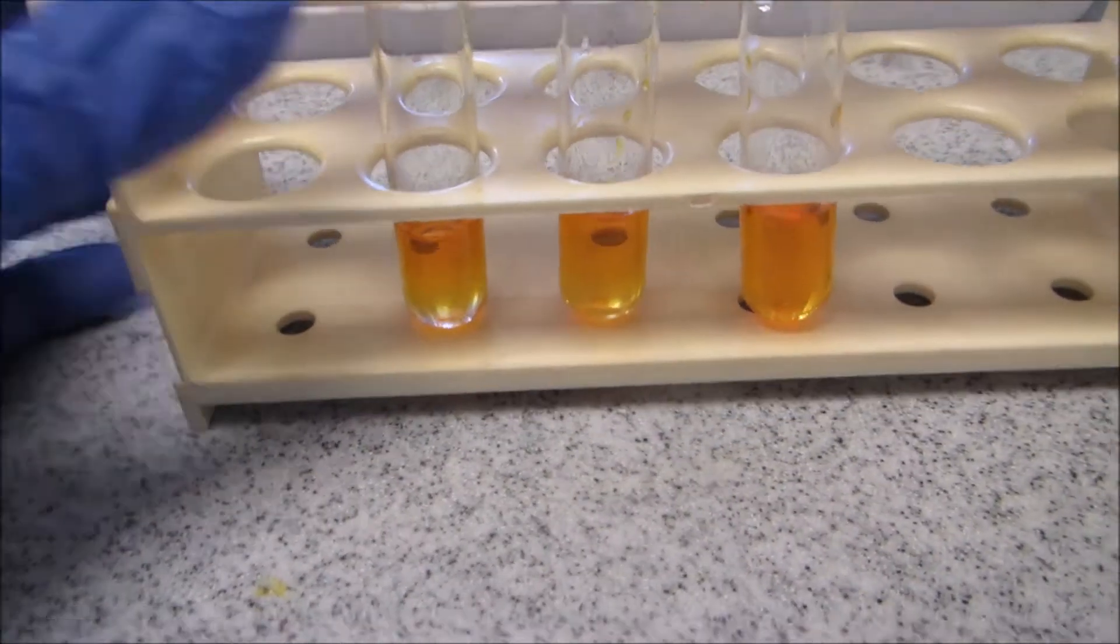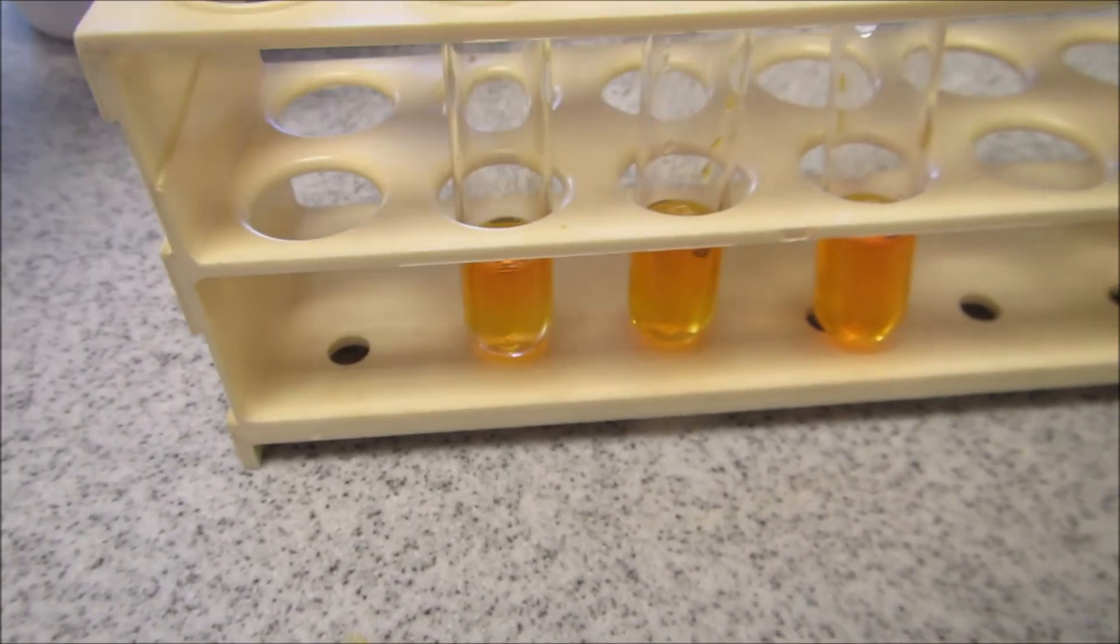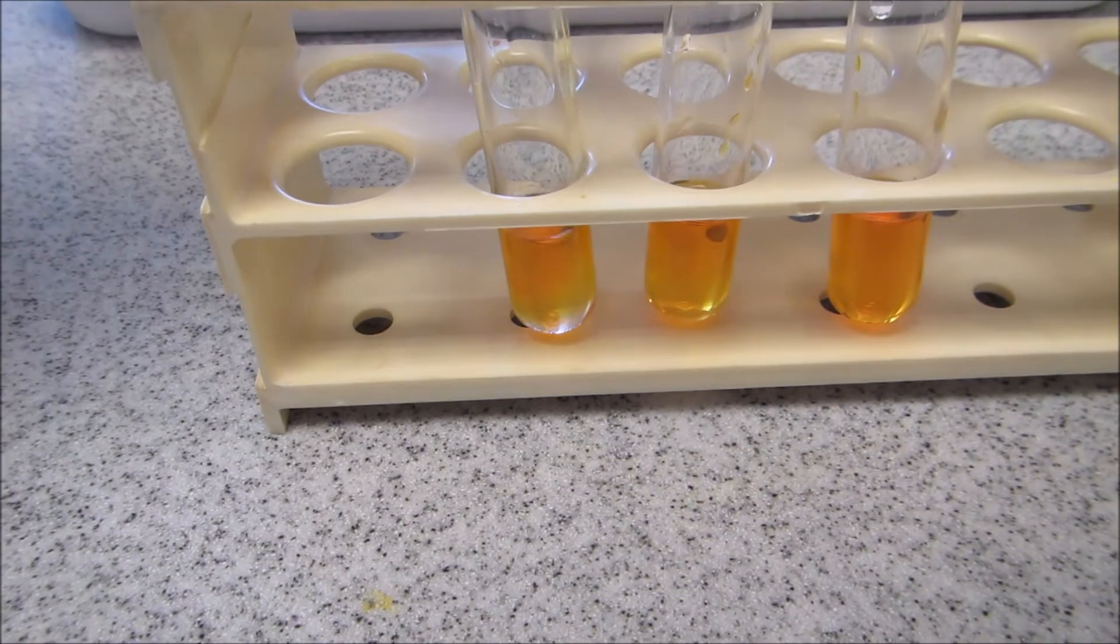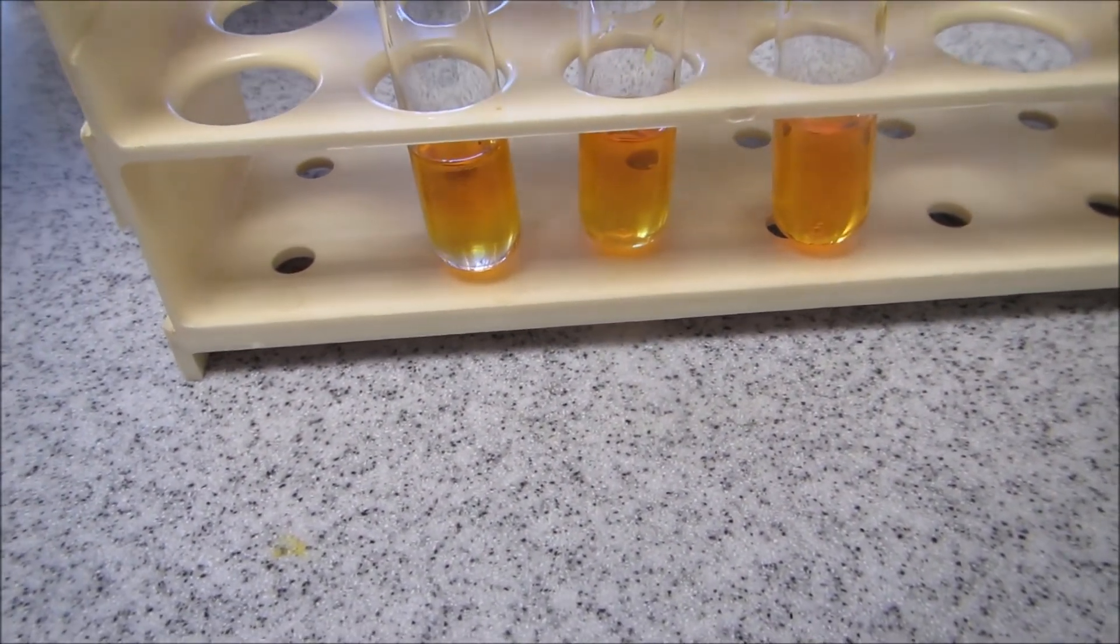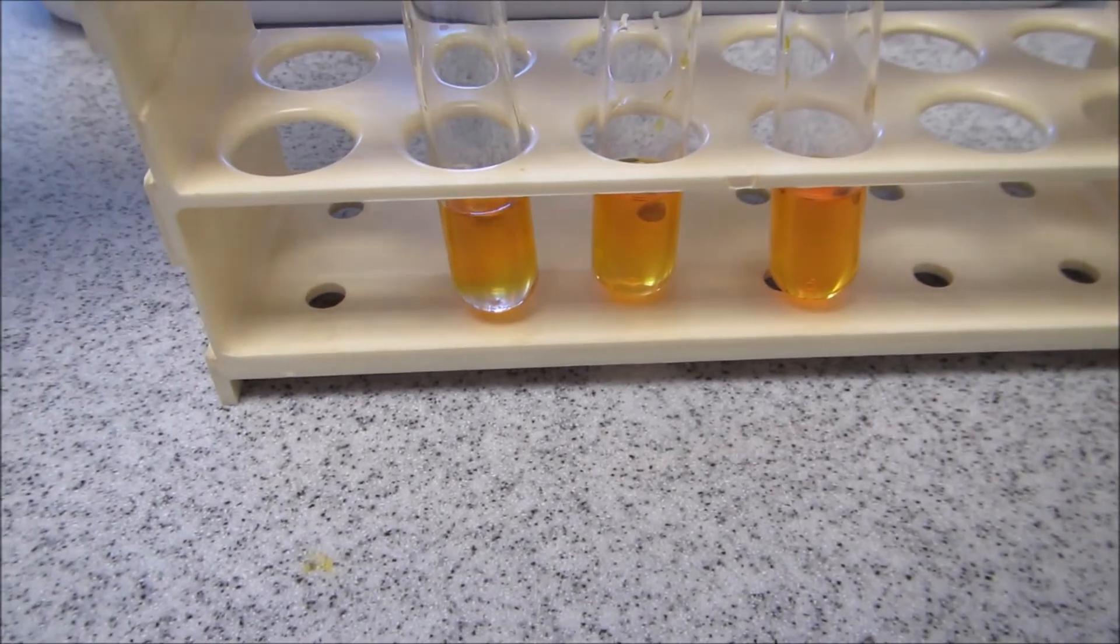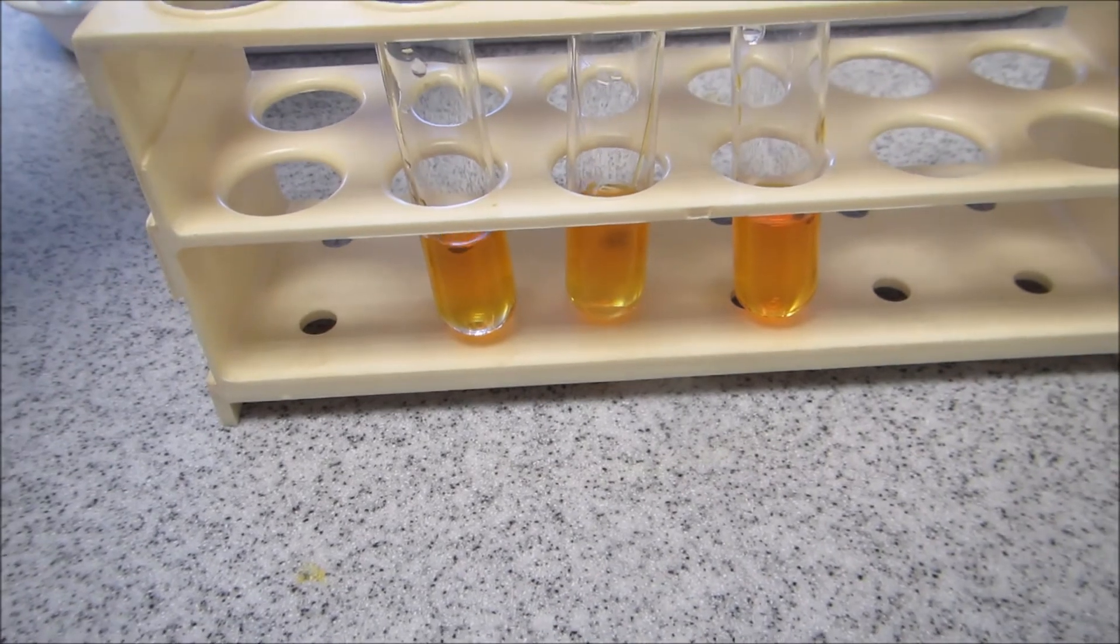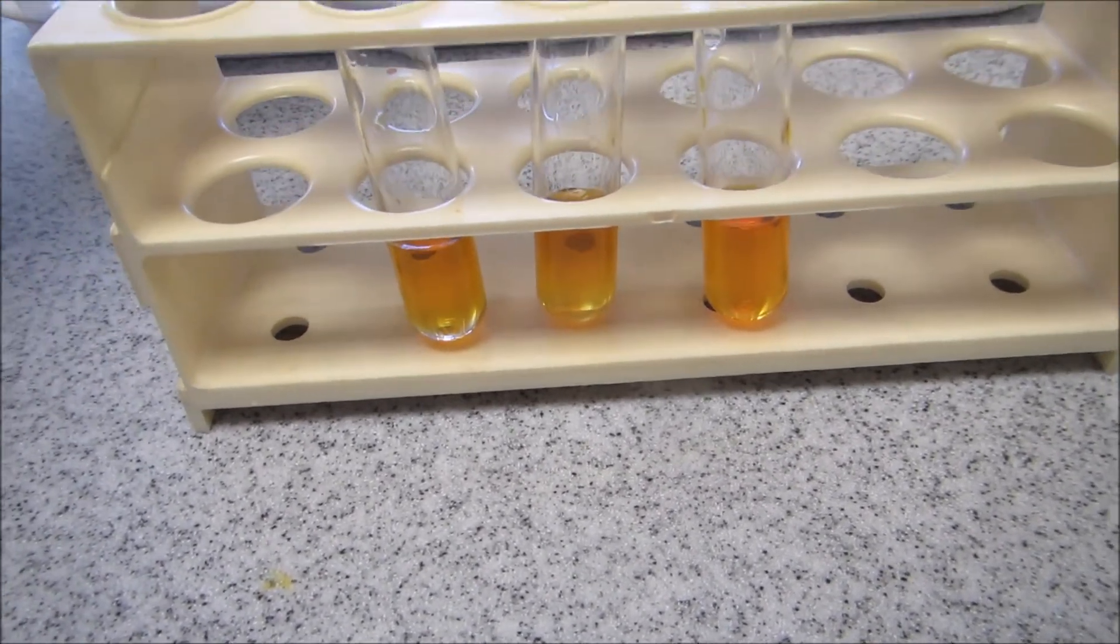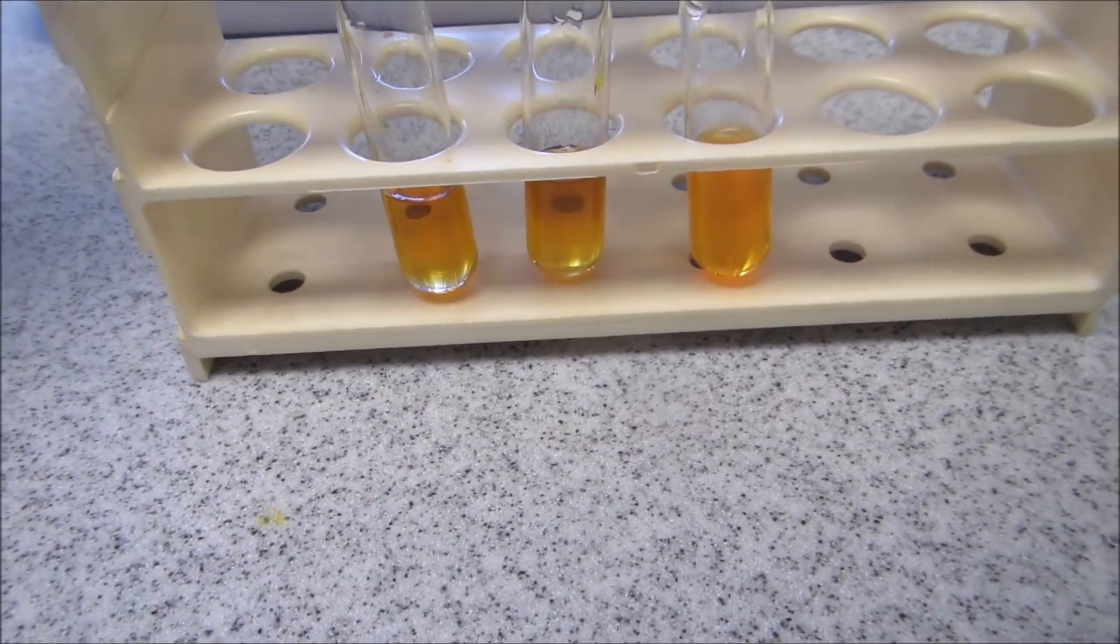I'm going to carry out the potassium dichromate test on the same ones, three, four, and five. So add a bit of three. What do you observe? Add a bit of four. Finally, add a bit of five.